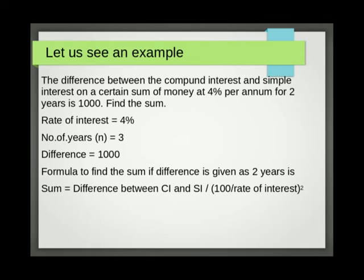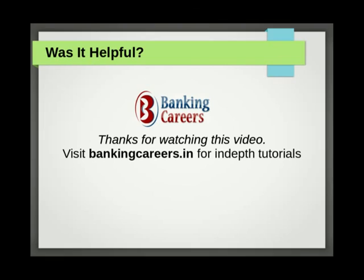Sum = Difference between CI and SI × (100/rate of interest)². After substituting the given values: 1000 × (100/4)² = 6,25,000. Thanks for watching this video.